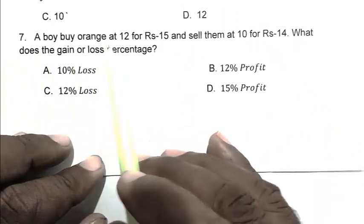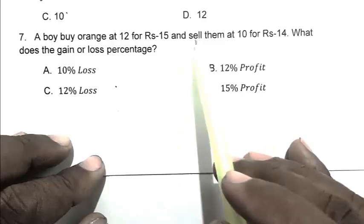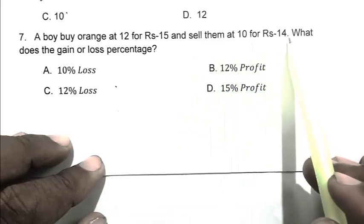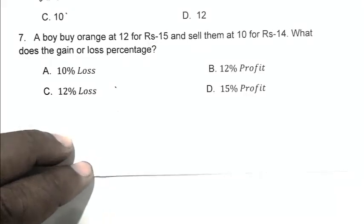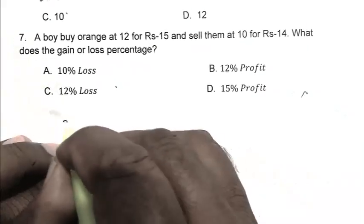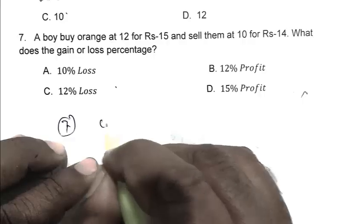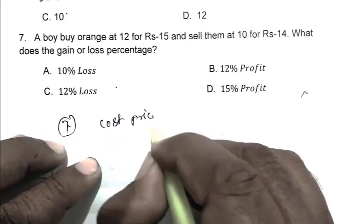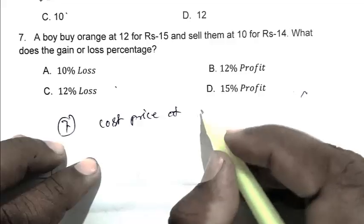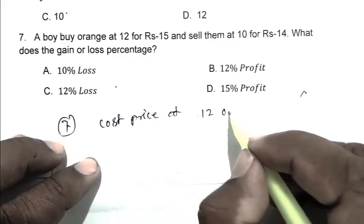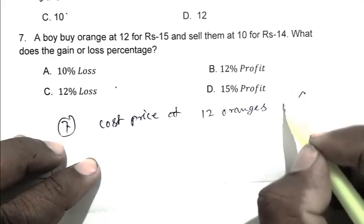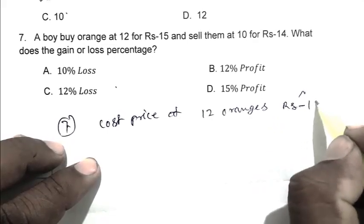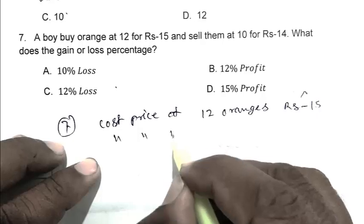Question number seven: A boy buys oranges at 12 for Rs.15 and sells them at 10 for Rs.14. What is the gain or loss percentage? Cost price of 12 oranges is Rs.15.